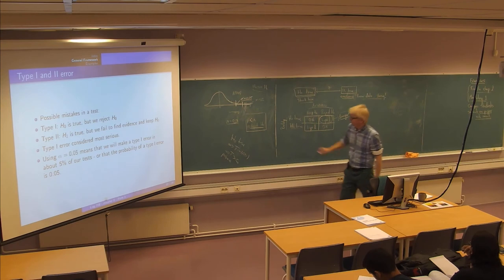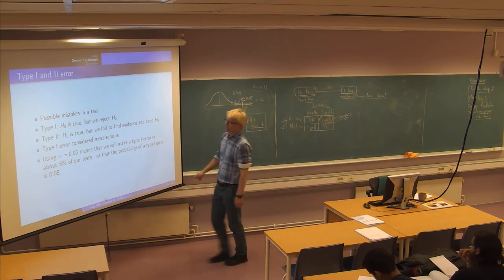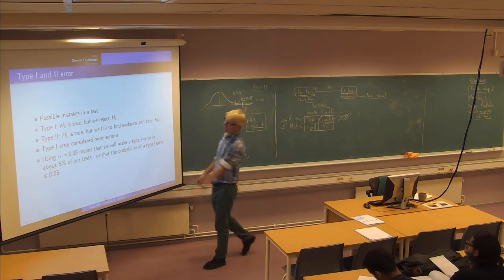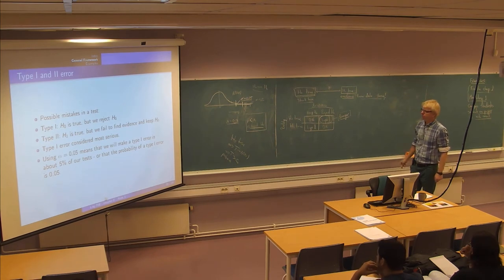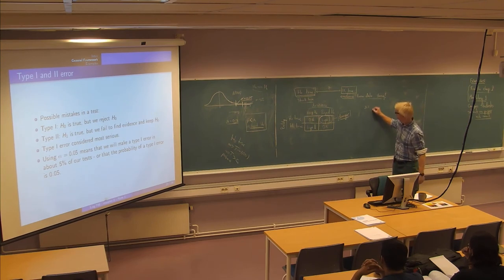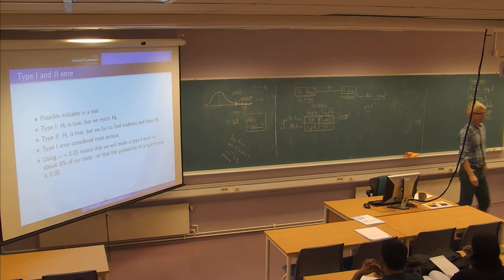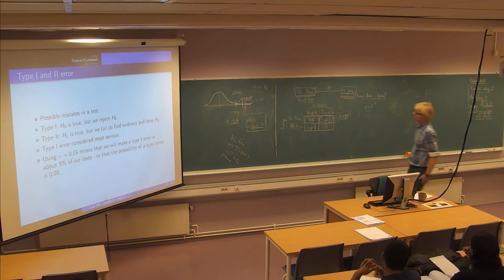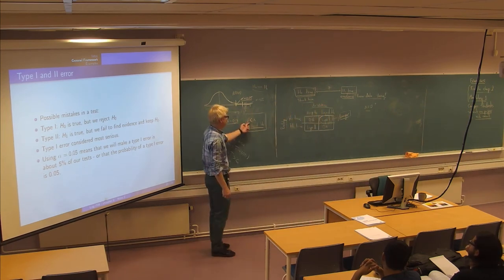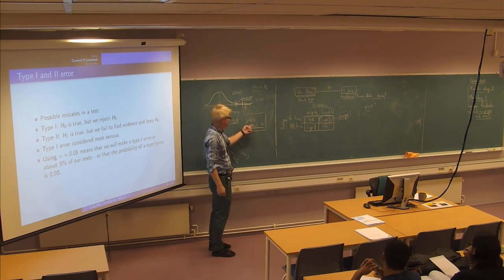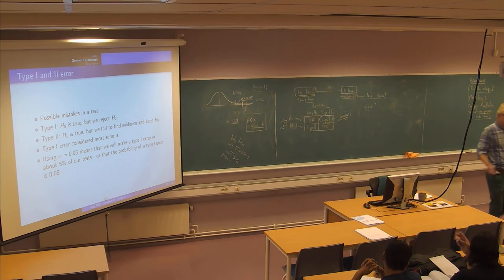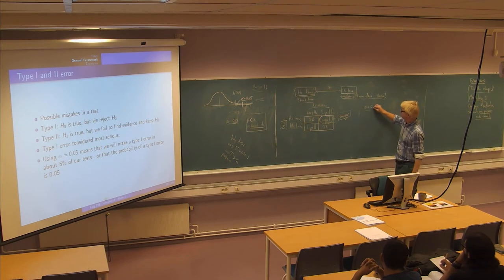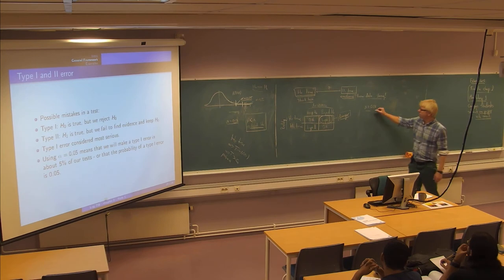Alpha is the probability of a type 1 error — that's important to keep in mind. You might ask why we don't set alpha equal to zero so we never make a type 1 error. The problem is you would then only reject h-zero when the p-value is essentially zero, meaning you'd put your rejection threshold so far out that you could never reject any h-zero. You need to allow some small allowance for errors to make the testing framework work.